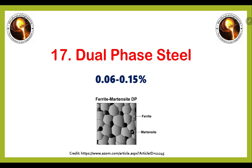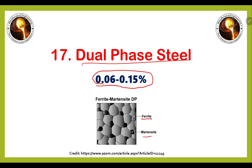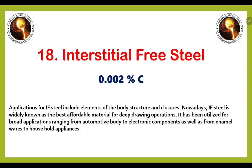Next on the list is dual phase steel, which has a carbon percentage from 0.06 to 0.15 percent. It shows a dual phase microstructure consisting of ferrite and martensite.